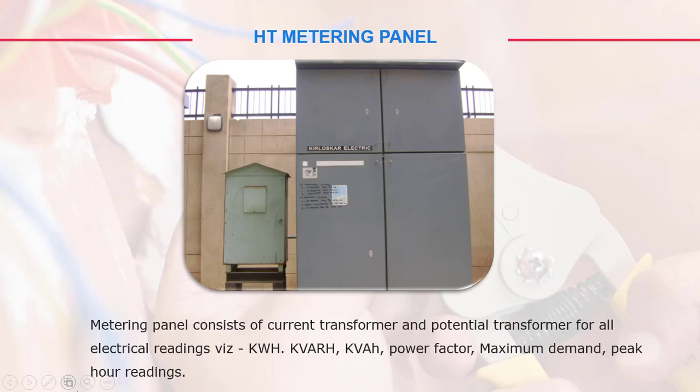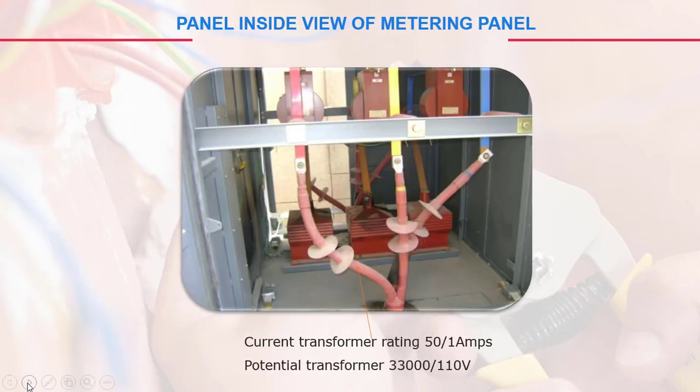From the metering panel, you can take KWH, KVARH, power factor, maximum demand, peak hour readings, and so on. Inside the metering panel, the current transformer rating in this case is 50/1A and the potential transformer is 33,000/110 volt.